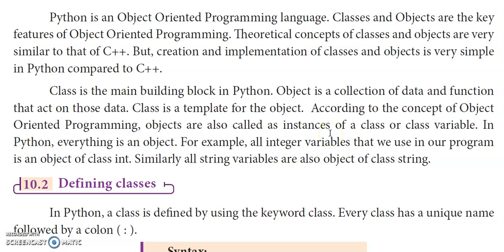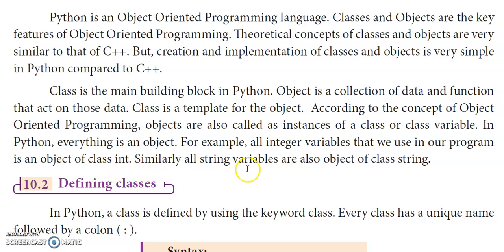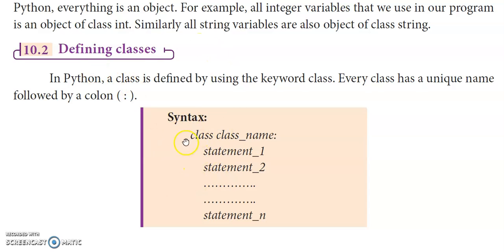An instance is a copy. In Python, not only class objects — all variables are considered objects. For example, using the type() function: type of any integer variable gives class int, so integer variables are objects of class int. Similarly, a string variable is an object of class string (str). So everything in Python is considered an object.